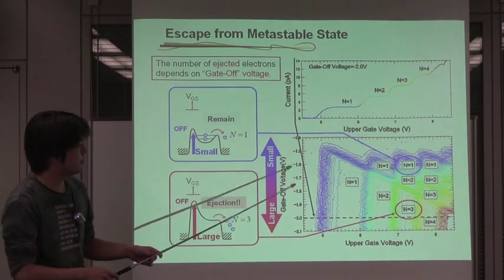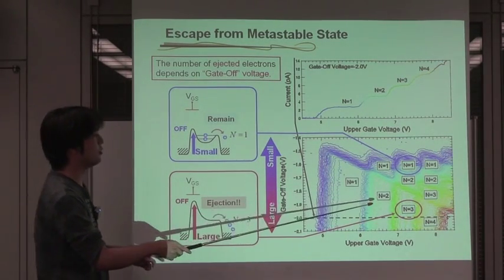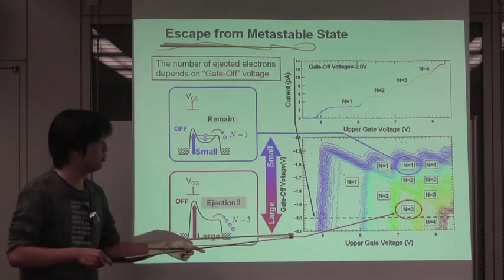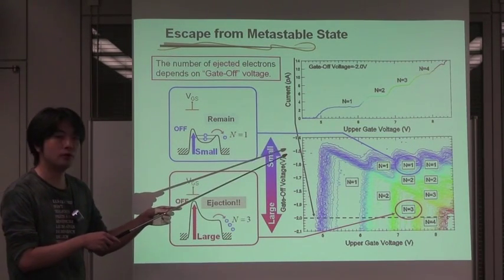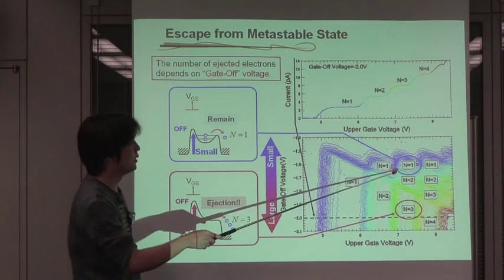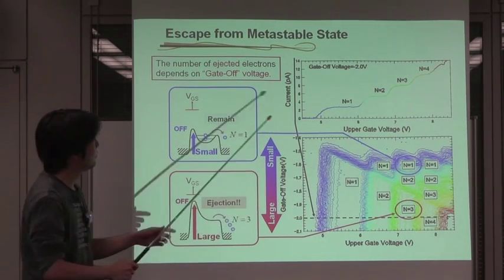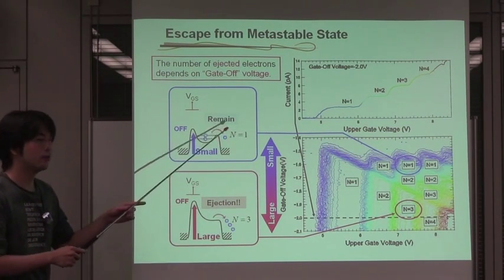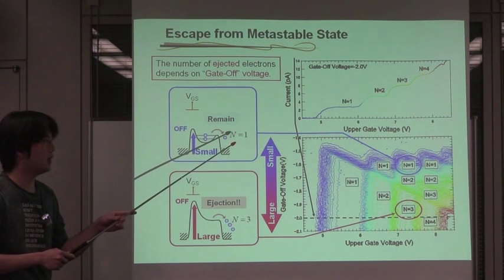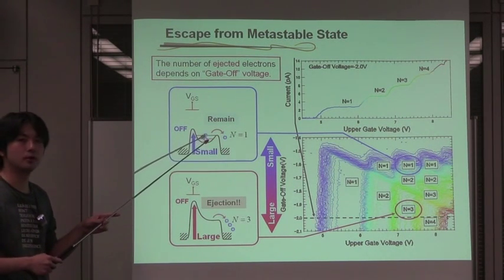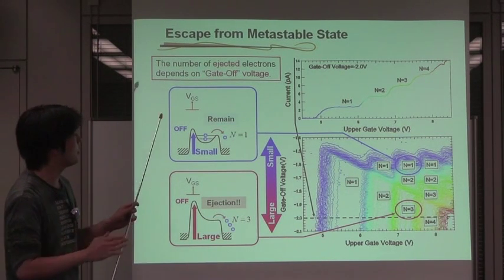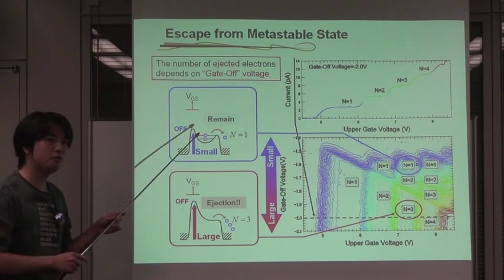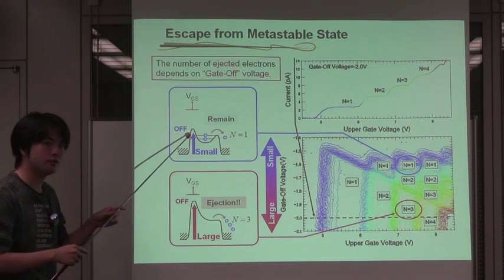However, the number of the ejected electron is reduced from 3 to 1 by making gate-off voltage negatively small. So the area of N equals 1 shows the incomplete ejection of the electron. So one electron is transferred and contributes to the current, but two electrons are remaining in the quantum dot. As you can expect, these remaining electrons can escape from the quantum dot if we wait for more time with the left-side gate switched off.